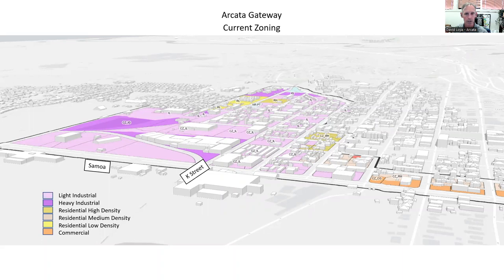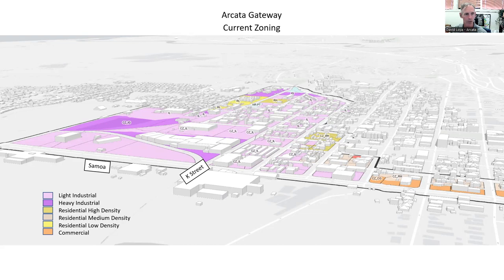Right now, the zoning in this area includes areas zoned light industrial, heavy industrial, residential high-density, residential medium-density, commercial, and residential low. So it's a real mix of different zoning districts currently in this area. The one thing all of this area has in common is that there's a lot of redevelopment potential within many of the parcels included here.